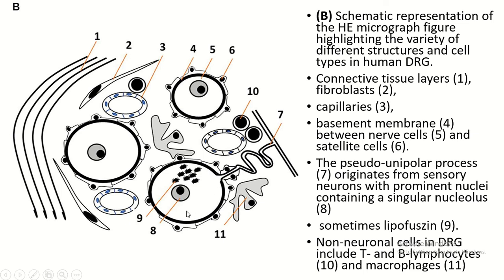This is the cell body of the sensory neuron with satellite cells. This is the pseudo-unipolar process. And this is a lipofuscin granule. These structures are present within the dorsal root ganglia.